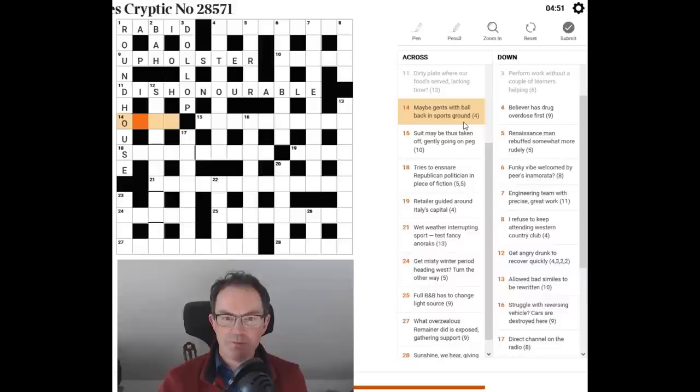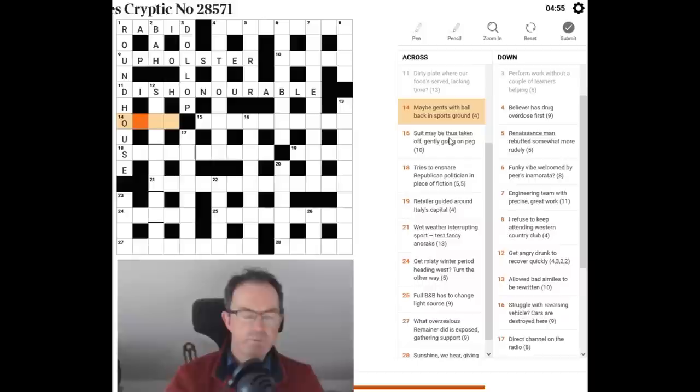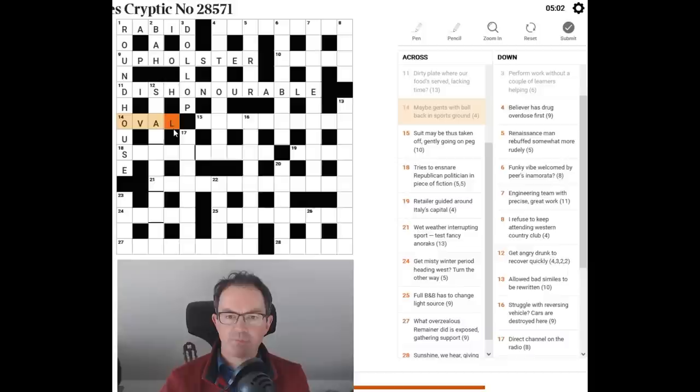14 across. Maybe gents. I'm thinking loo for that. It's in a toilet. With ball back on. It must. Yes. Oh no. Well I was almost right. It's oval isn't it? The sports ground of the oval. Where you might see some test cricket if you're lucky.